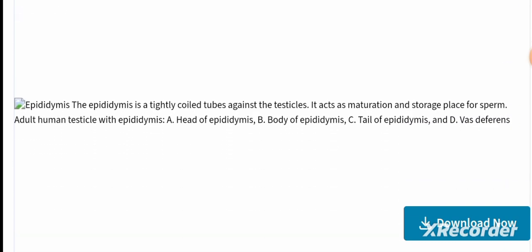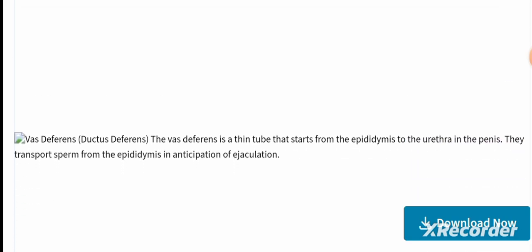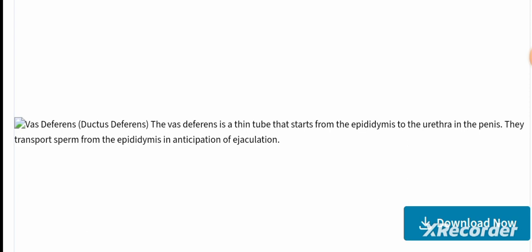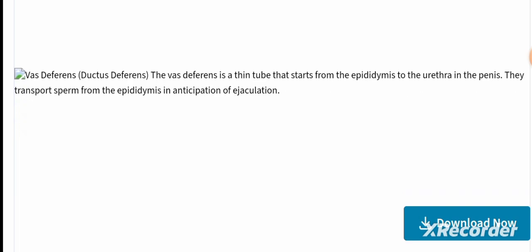The epididymis is a tightly coiled tube against the testicle. It acts as a maturation and storage place for sperm. The adult human testis with the epididymis includes the head, body, and tail of the epididymis, and the vas deferens. The vas deferens is a thin tube that starts from the epididymis to the urethra in the penis, transporting sperm from the epididymis in anticipation of ejaculation.